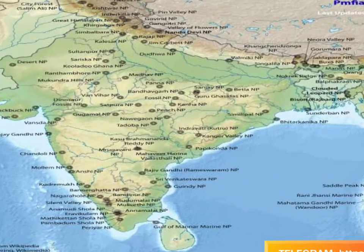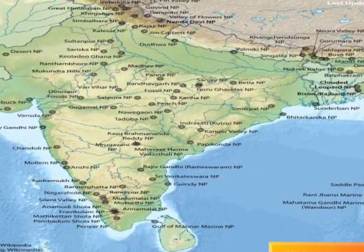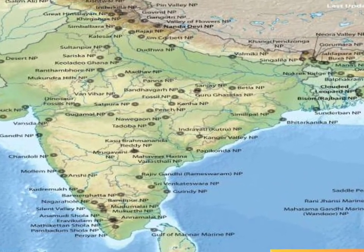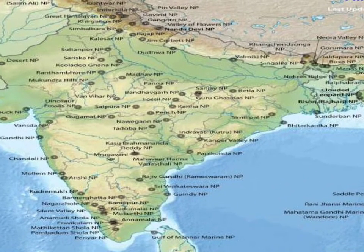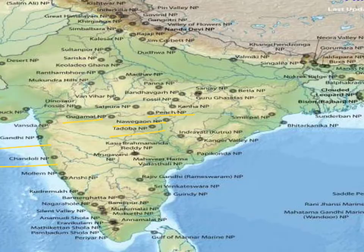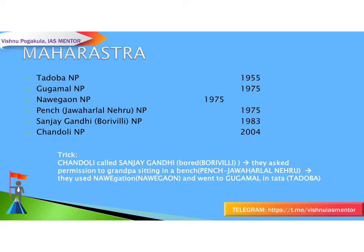First, let's see the national parks in Maharashtra. In Maharashtra, we can find six national parks: Gugamal National Park, Pench National Park (also called Jawaharlal Nehru National Park), Navegaon National Park, Tadoba National Park, Sanjay Gandhi National Park, and Chandoli National Park.